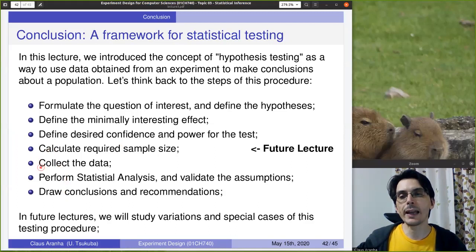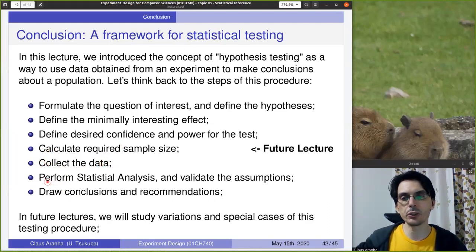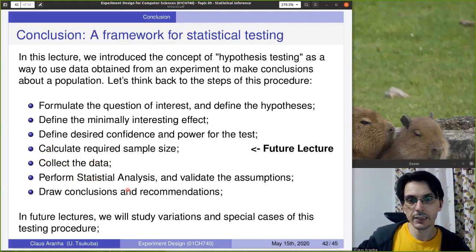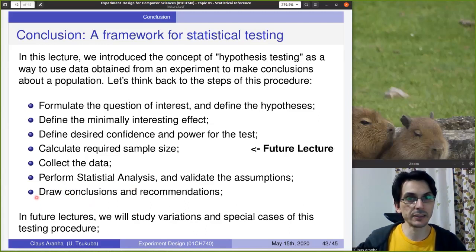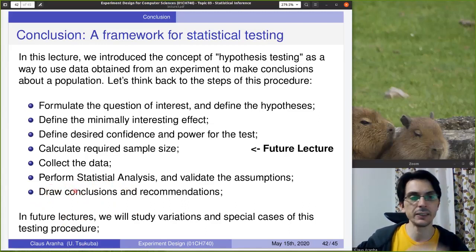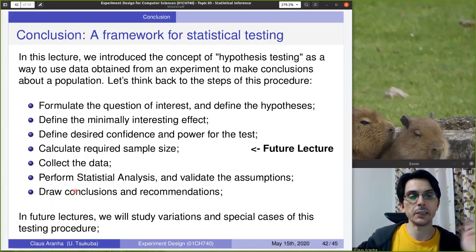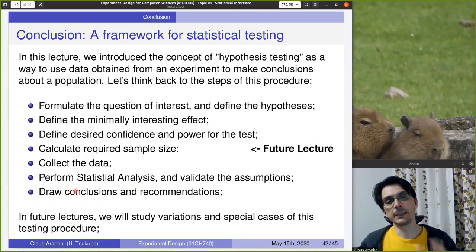Based on the p-value and effect size, we can say we reject the null hypothesis and estimate that the difference between the null mean and the actual mean is about this much, or that we did not reject the null hypothesis and report a confidence interval for the mean. In future lectures, we will study variations and special cases: the next lecture covers hypothesis testing for two samples — comparing algorithm A and algorithm B — and the lecture after that covers calculation of sample size.